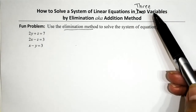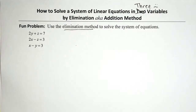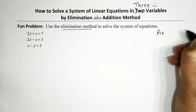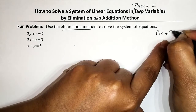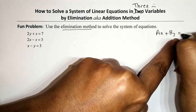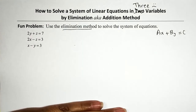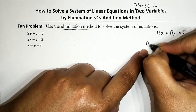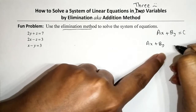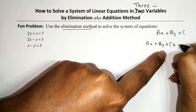So if we had a system of linear equations in two variables and were asked to solve it by elimination, the first thing we need to do is make sure the equations are in standard form. For a system in two variables, standard form looks like aX + bY = C. But if we have a system of equations in three variables, standard form looks like aX + bY + cZ = D.